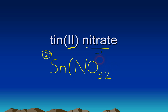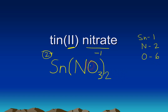Whatever is inside the parentheses is multiplied by what's outside. So in Sn(NO₃)₂ we have one tin atom, two nitrogen atoms (one times two), and six oxygen atoms (three times two). One formula unit of this compound has a total of nine atoms — six plus two plus one equals nine.